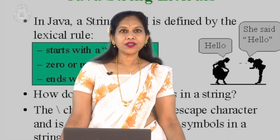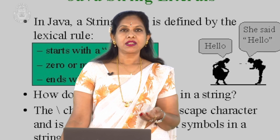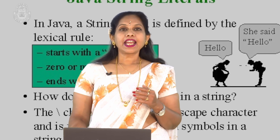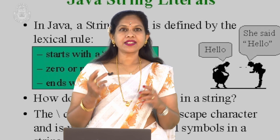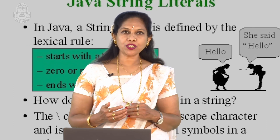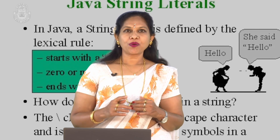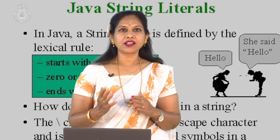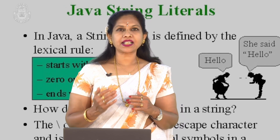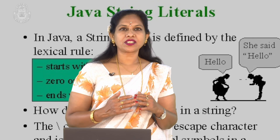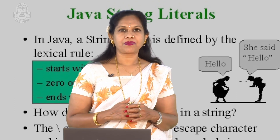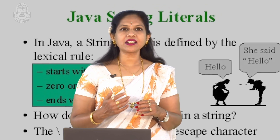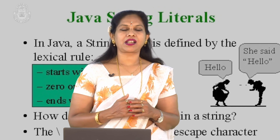A string is a combination of characters. String literals are a set of characters enclosed within double quotes. As they are real objects, it is possible to concatenate, modify, and test them. For example, "this is a test string" represents a string. Strings can contain character constants and Unicode characters. When a string literal is declared, Java automatically creates an instance of the class String and initializes it with the specified value.